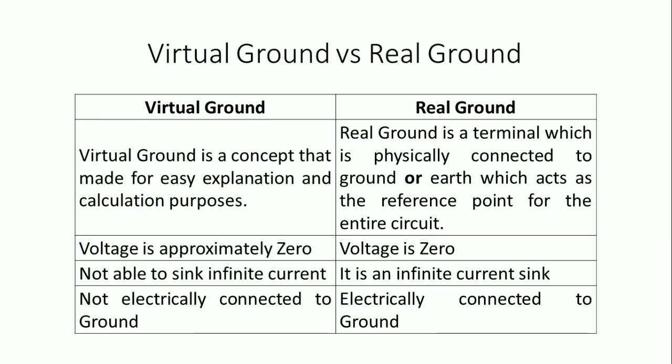There are some differences between virtual ground and real ground. Virtual ground is a concept made for easy explanation and calculation purposes, whereas real ground is a terminal physically connected to ground which acts as the reference point for the entire circuit. In virtual ground the voltage is approximately equal to zero, but in real ground the voltage is exactly zero. Virtual ground cannot sink infinite current, whereas real ground can sink infinite current. Virtual ground is not electrically connected to ground, but real ground is electrically connected to ground.